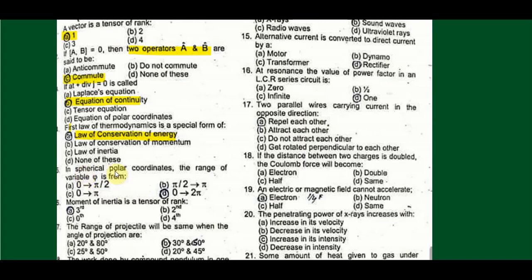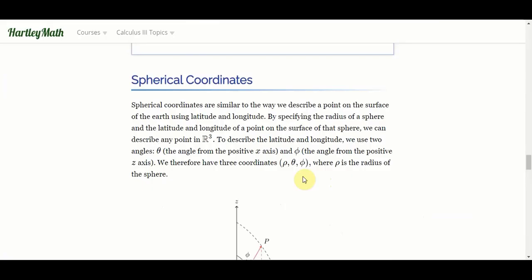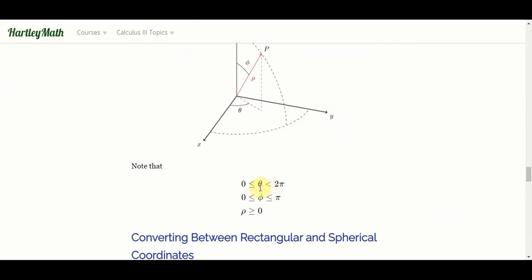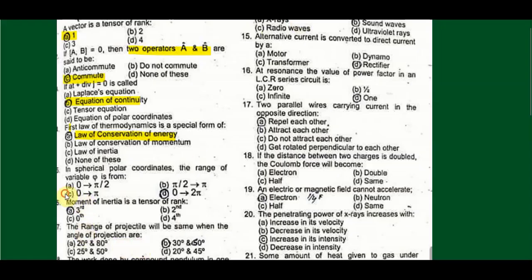In spherical polar coordinates, the range of variable phi is: in spherical coordinates theta varies from zero to 2π, while phi varies from zero to π. Similarly rho or R will be greater than or equal to zero. So the best option will be C, zero to pi.